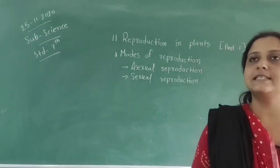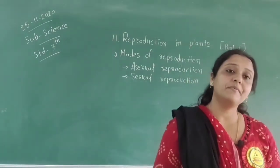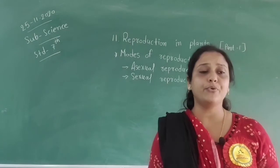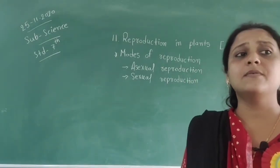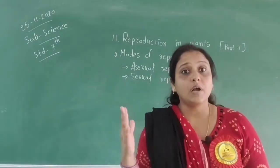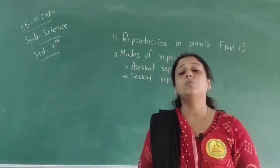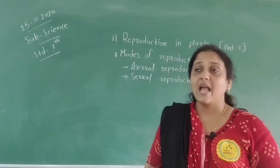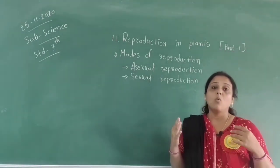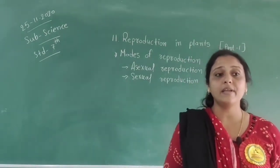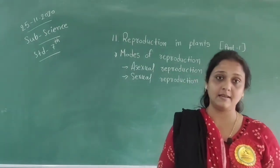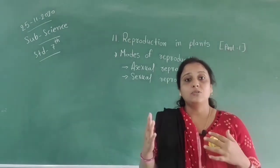Hello students, welcome to our session. Today we talk about Chapter 11, the name of this chapter is 'Reproduction in Plants.' Every living organism on earth does reproduction to continue their life. We can see different ways available in reproduction. One of the most important characteristics of all living organisms is to produce individuals of their kind.